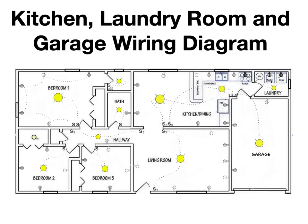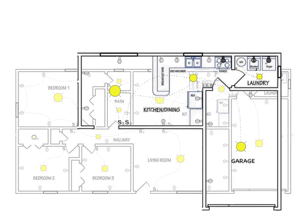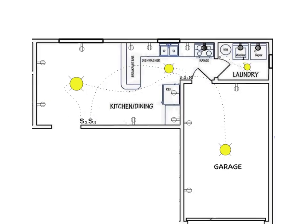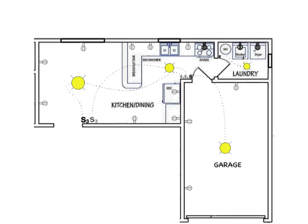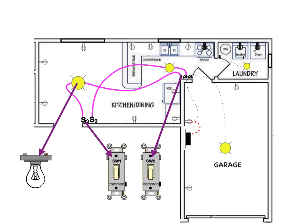Now we will look at the kitchen, laundry room, and garage wiring diagram. First, I want to unscramble the confusion surrounding the kitchen lights, which are two lights, each controlled by a set of three-way switches. We are going to feed these light circuits at the three-gang switch receptacle next to the garage door, picking up one of the garage duplex receptacles along the way. Let's look at how a three-way switch schematically controls a light.